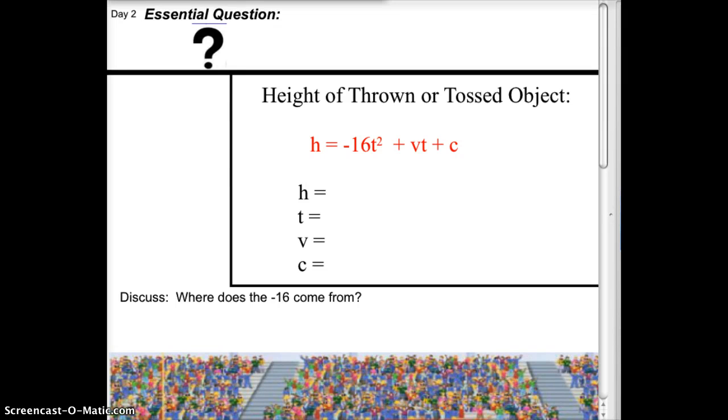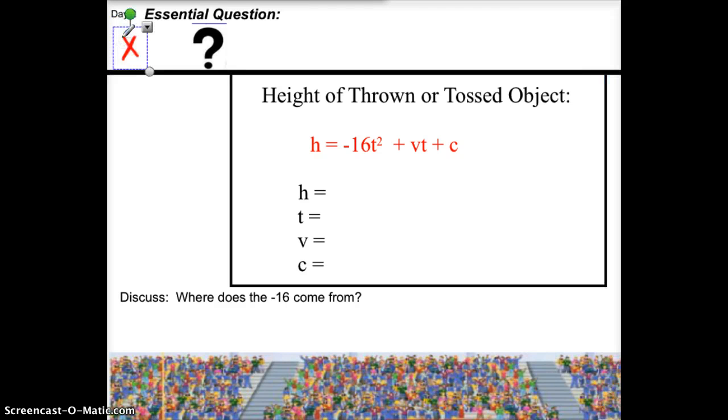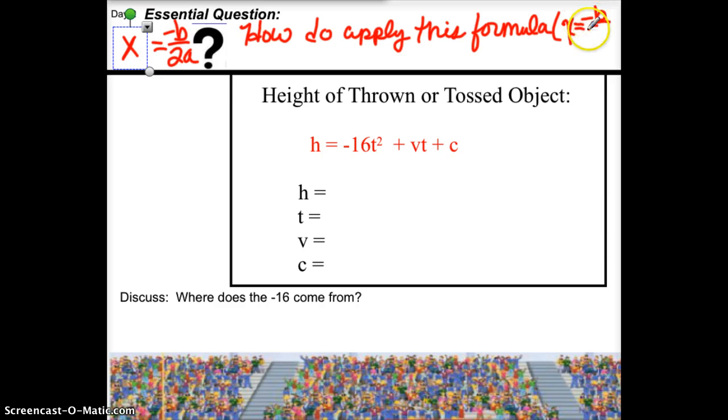In point two, we've been working with how you find the vertex by using the formula x equals negative b over 2a. And in this section, our main question is going to be, how do I apply this formula - what formula am I talking about? The one for finding the axis of symmetry, which is the x-coordinate of the vertex.